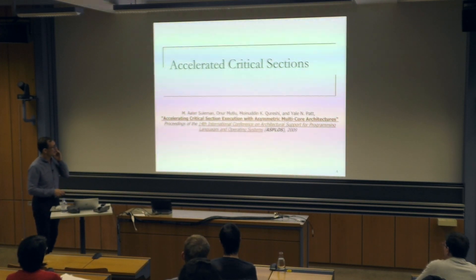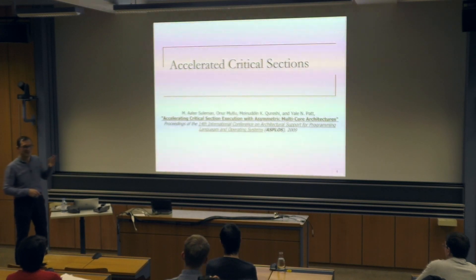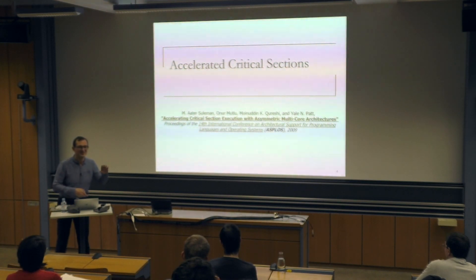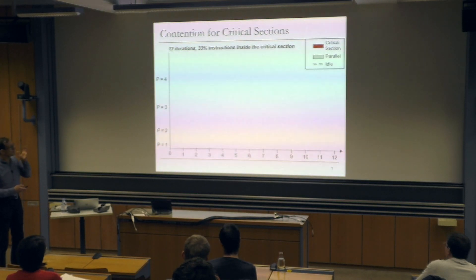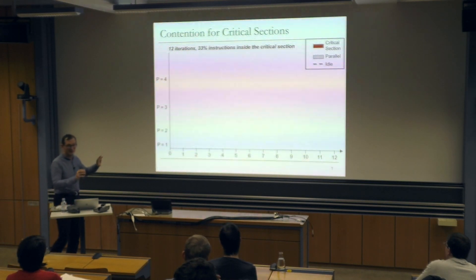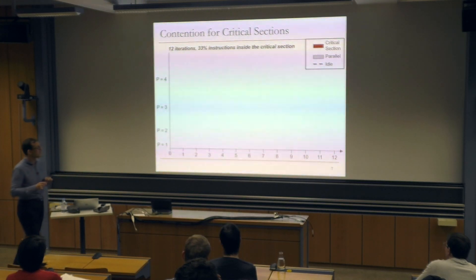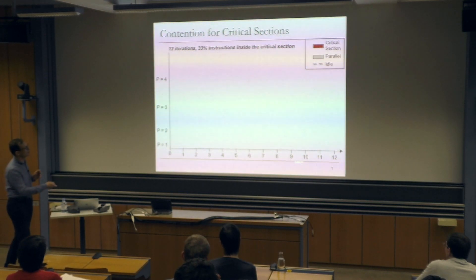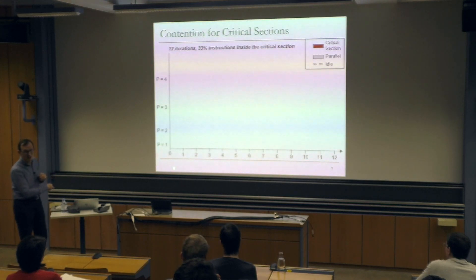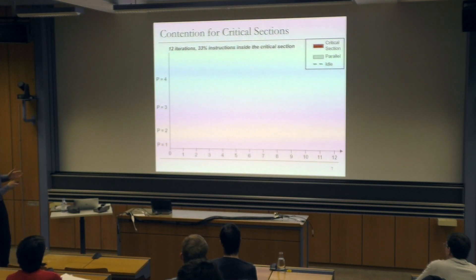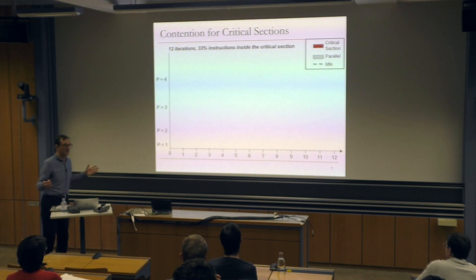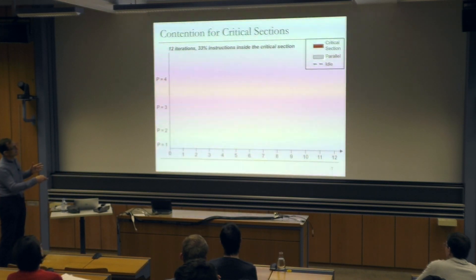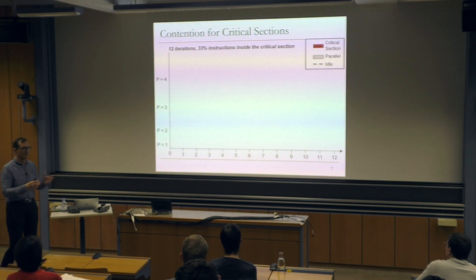We're going to talk about this work published more than 10 years ago that discusses accelerating critical sections. I'll motivate it with a pure example. On the x-axis we have time units, on the y-axis the number of processors used. We assume a piece of code consisting of 12 iterations where 33% of the instructions are inside the critical section. The red parts are the critical section, the gray parts execute in parallel across different processors, and there's also an idle part.